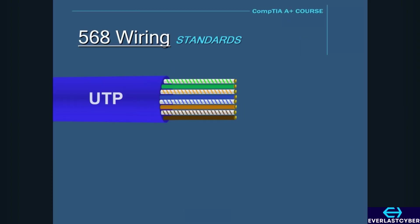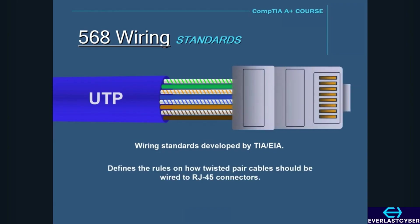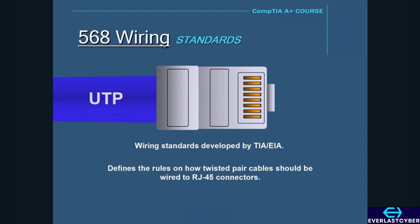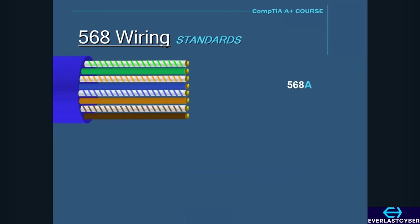The terms 568A and 568B refer to a set of wiring standards developed by TIA-EIA, which is also known as the Telecommunications Industry Association. These terms define the rules on how twisted pair cables should be wired to RJ45 connectors, and these wires must follow a certain order so that the network can function properly.